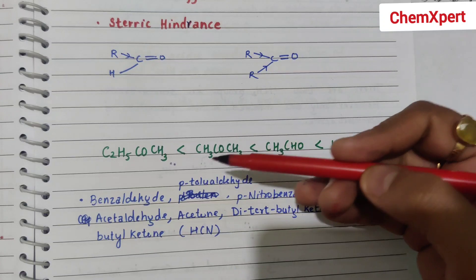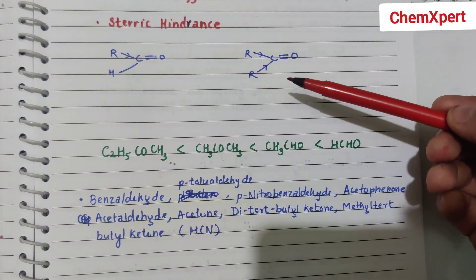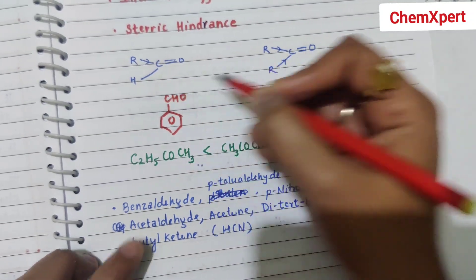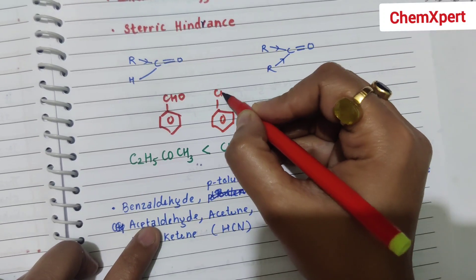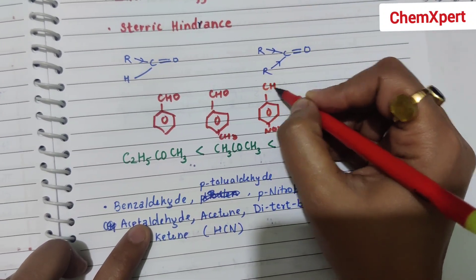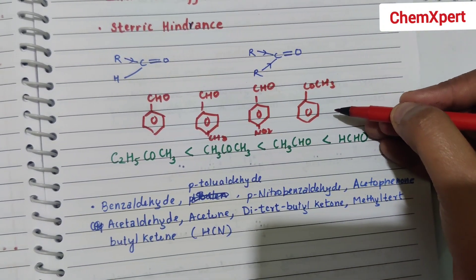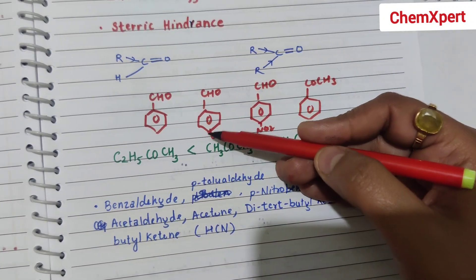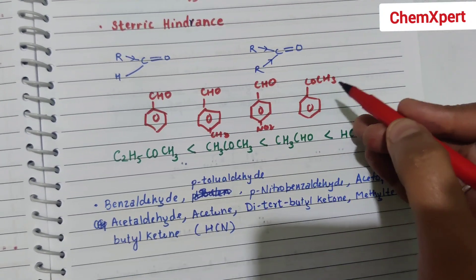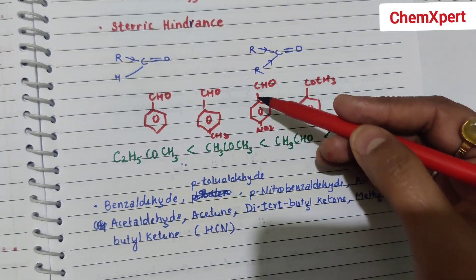Arranging benzaldehyde, paratolylaldehyde, paranitrobenzaldehyde, and acetophenone in order of reactivity. Benzaldehyde is benzene-CHO, paratolylaldehyde has CH3 at the para position, paranitrobenzaldehyde has NO2 at the para position, and acetophenone is benzene-COCH3. Since ketone is least reactive, acetophenone is the least reactive. Among the aldehydes, paratolylaldehyde has +I effect from CH3, making it less reactive. The most reactive is paranitrobenzaldehyde because NO2 is electron-withdrawing. Order: acetophenone < paratolylaldehyde < benzaldehyde < paranitrobenzaldehyde.